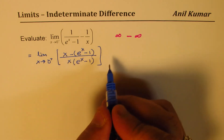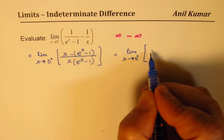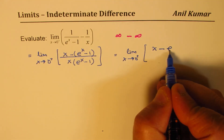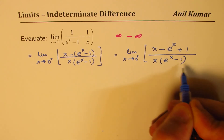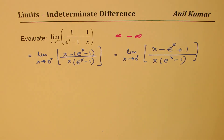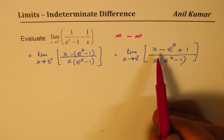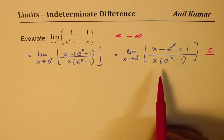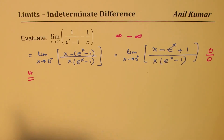Opening the bracket, we get the limit as x approaches 0+ of (x minus e^x plus 1) over (x times (e^x minus 1)). Substituting 0: the numerator gives 0 minus 1 plus 1 which is 0, and the denominator also gives 0. So we have a 0/0 indeterminate and can apply L'Hopital's rule.